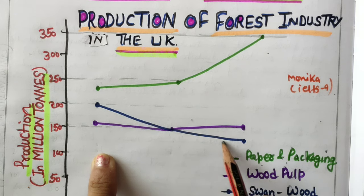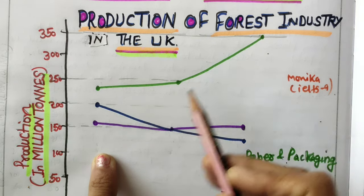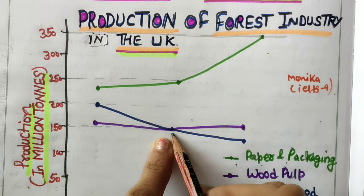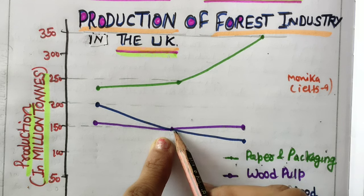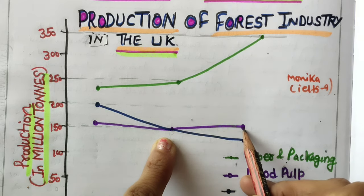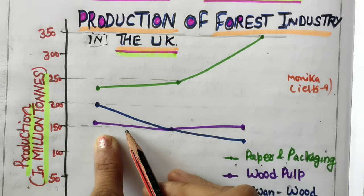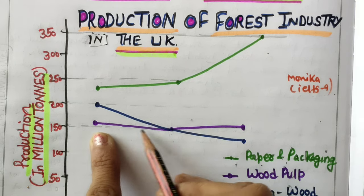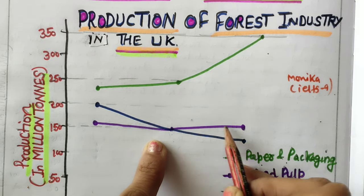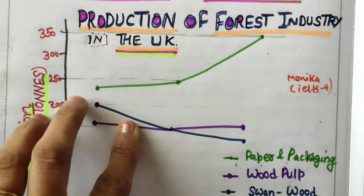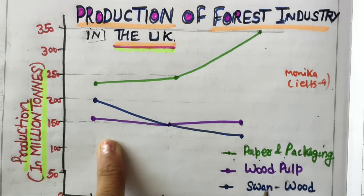Looking at the trends: one line is going up — that's an upward trend, showing growth in production. Another line is going down — that's a downward trend. The third line shows slight fluctuations but finally increases with some growth. So you can say it increased but with little fluctuations, not a major increase.